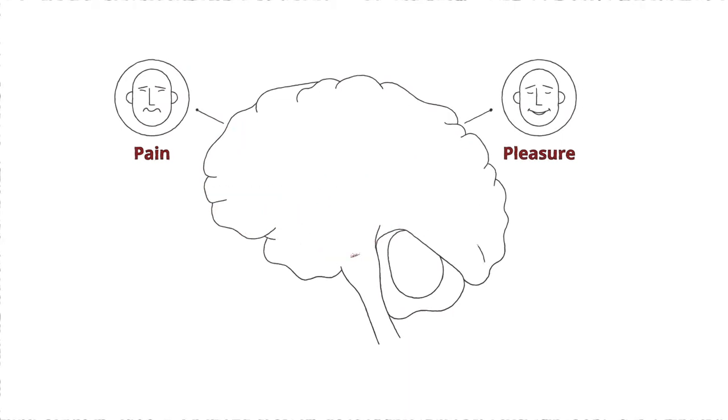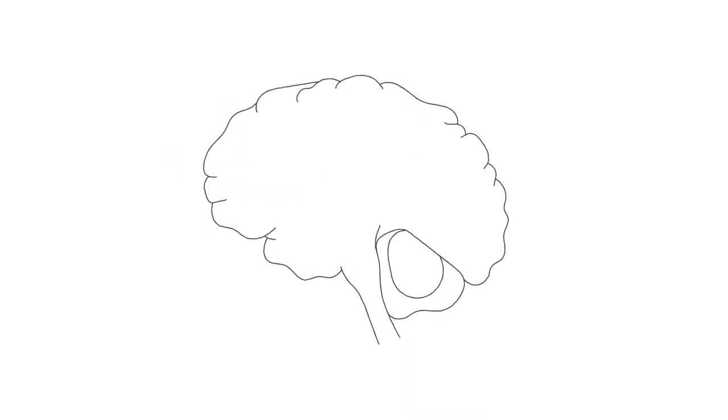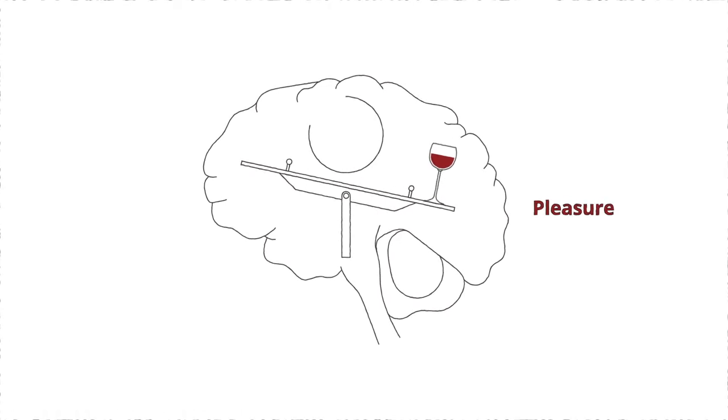Pleasure and pain work like opposite sides of a balance. Imagine our brains contain a balance like a teeter-totter in a child's playground. When nothing is on the balance, it's level with the ground. When we do something pleasurable, dopamine is released in our reward pathway and the balance tips to the side of pleasure. The more our balance tips, and the faster it tips, the more pleasure we feel.